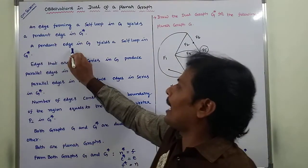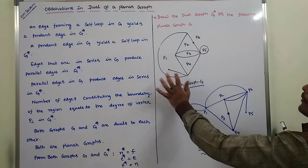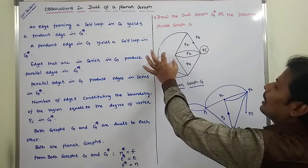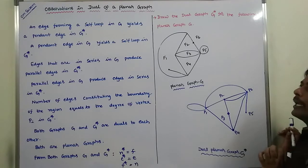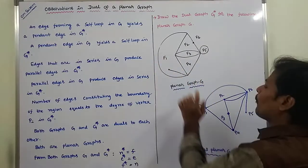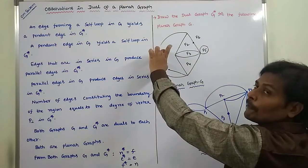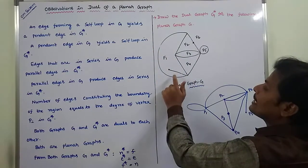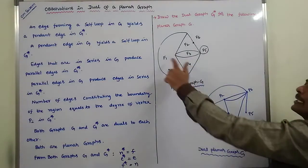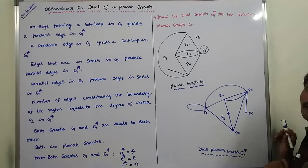Second point: a pendant edge in G is a self-loop in G star. Here in this graph, this edge is a pendant edge, and this pendant edge is available in region F1. Then G star contains a self-loop at the corresponding point P1. In the given graph G, F1 contains the pendant edge, and the corresponding G star has F1's corresponding point P1 with a self-loop at vertex P1.